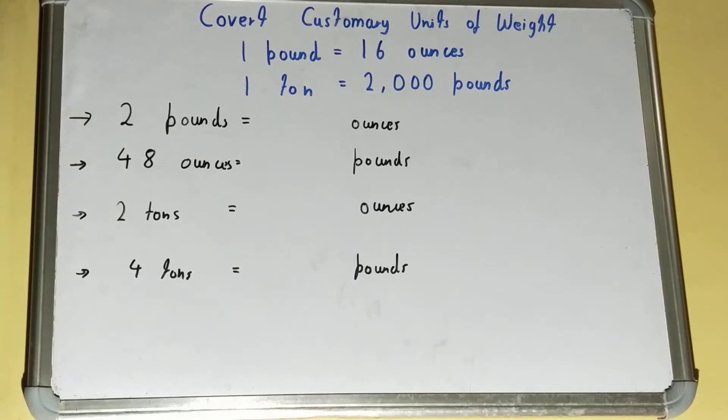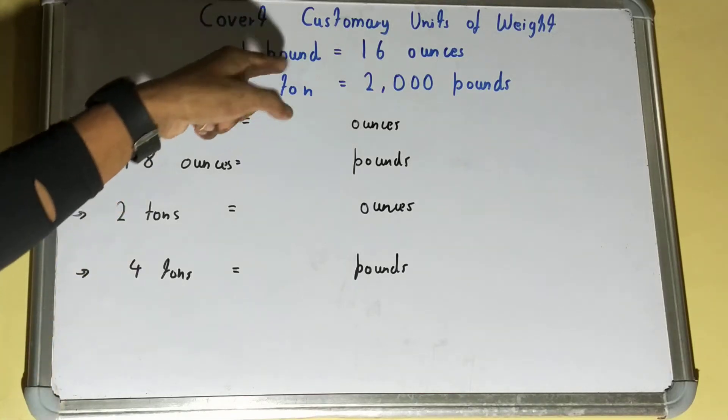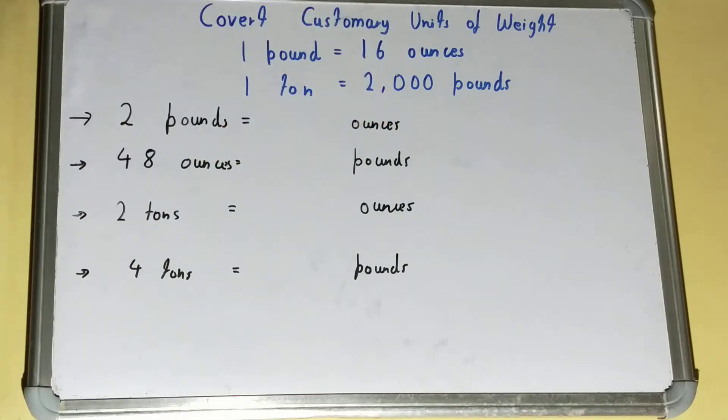Before going on to the examples or conversions, you need to know this: one pound is equal to 16 ounces and one ton is equal to 2,000 pounds. This will be helpful in the conversion process.